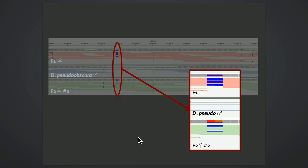And here we have one of the F2 offspring. And if we zoom in on these two adjacent SNPs right here, we see that the F1 female is heterozygous, as expected. The pseudoobscura male that it was crossed to is homozygous. No surprises there. And this F2 female happens to be heterozygous.